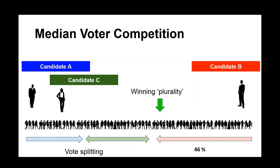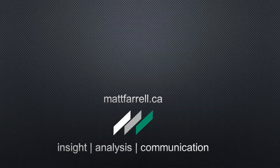And there your 46% can again be a winning margin. We refer to this as vote splitting between candidate A and candidate C, who are both to some extent competing over the same voters. That is why we are seeing so many lawsuits in the 2020 presidential election.